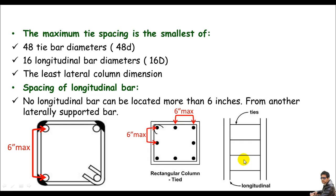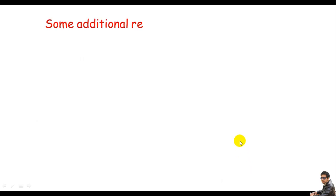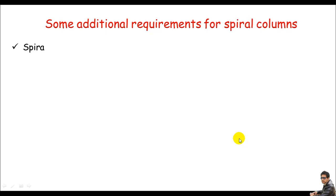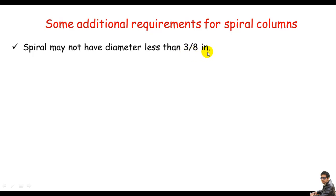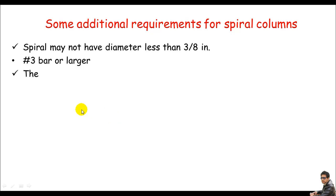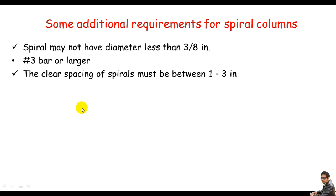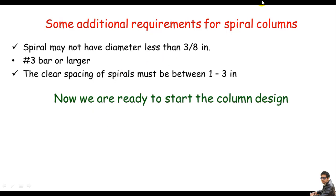For spiral columns, there are additional requirements. The spiral diameter may not be less than 3/8 inches, meaning a #3 bar or larger must be used. Also, the clear spacing of the spiral must be between 1 and 3 inches, where the pitch is defined as the distance between two turns of the spiral.